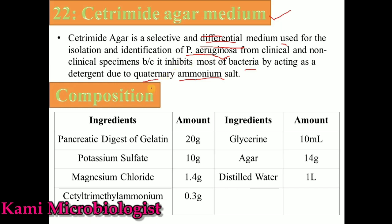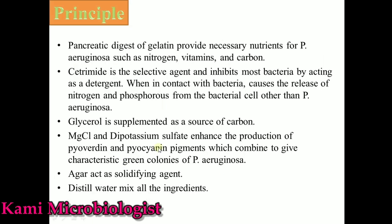That's why we can say it is a selective medium only for Pseudomonas aeruginosa. The composition is: pancreatic digest of gelatin 20 grams, potassium sulfate 10 grams, magnesium chloride 1.4 grams, cetyl trimethyl ammonium bromide 0.3 grams, glycerin 10 ml, agar 14 grams, and distilled water 1 liter.